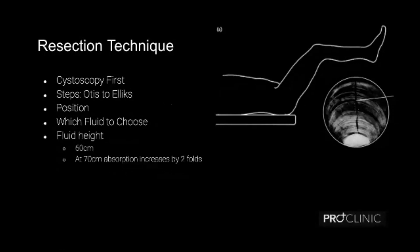Now, when we start the process — we know how resection is done and what the instruments are — it is advisable to do a cystoscopy first. We have to make sure the larger sheet doesn't cause much injury, so we start by calibrating the urethra. Once we do a cystoscopy we get an idea about the caliber of the urethra. Our group of experts who have been teaching the TURP module for the last four years believe that Otis urethrotomy is not a mandatory step.